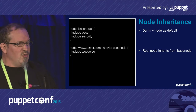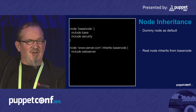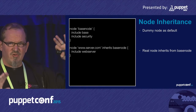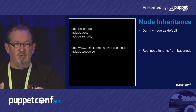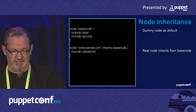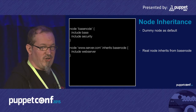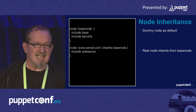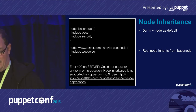The first breaking thing: who's using inheritance in general? Who's using inheritance on a node basis? Some people do code like this — defining a node that is non-existent, just some kind of dummy node, and then having your real node declaration inherit everything from that other node declaration. This is no longer working in Puppet 4. It will hard-break, telling you: node inheritance is not supported. It doesn't mean inheritance is completely gone — it's still there — but inheriting nodes is no longer allowed.